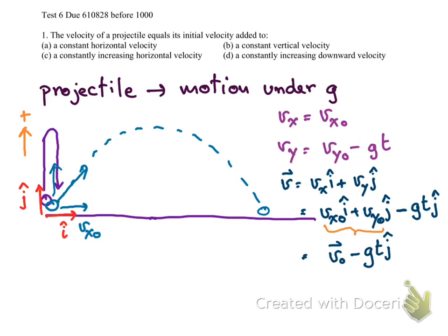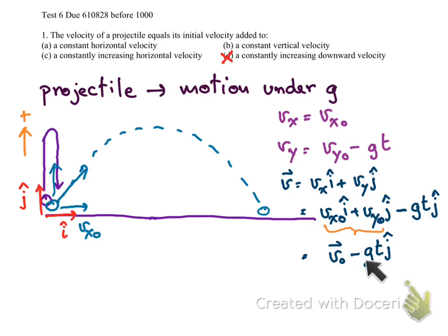The negative sign means the velocity increases downward, because we took upward as positive. So we add the initial velocity with an increasing downward velocity. The answer is D: we have the initial velocity V0 and we add a constantly increasing downward velocity, where the rate of change equals g, pointing downward.